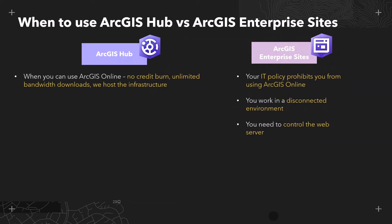So when would you decide to use Enterprise Sites or ArcGIS Hub? I would recommend you use ArcGIS Hub when you can use ArcGIS Online — there's no credit burn, you have unlimited bandwidth downloads, and we host the infrastructure. However, a lot of users want to deploy this functionality on a private network. So if your IT policy prohibits you from using ArcGIS Online, if you work in a disconnected environment, or if you need control of your web server, then use ArcGIS Enterprise Sites.